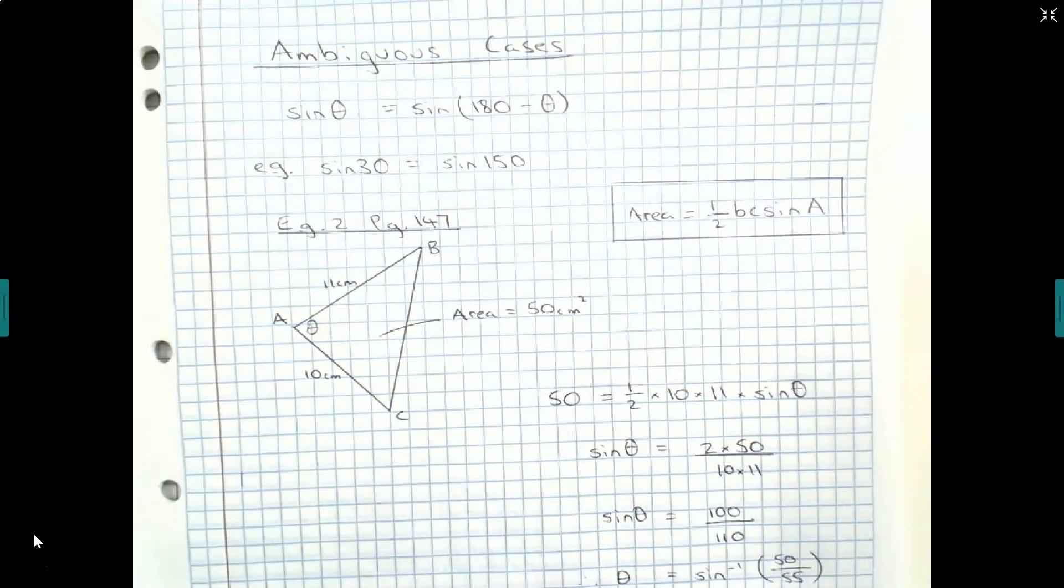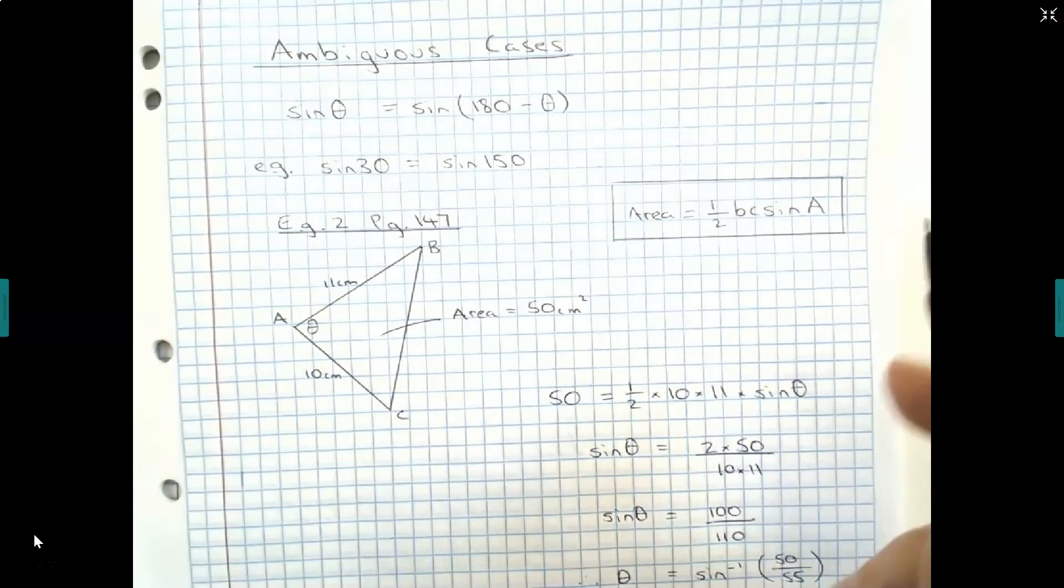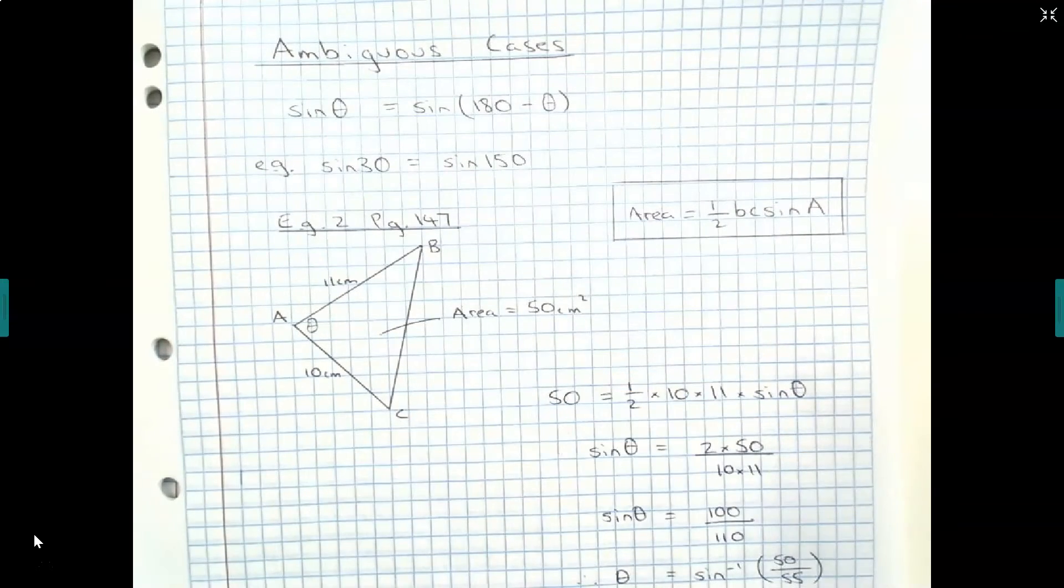So we know that angle theta of 65.4 degrees would result in an area of 50 centimeters squared. However, remember,